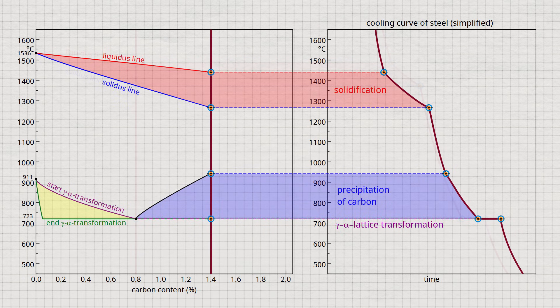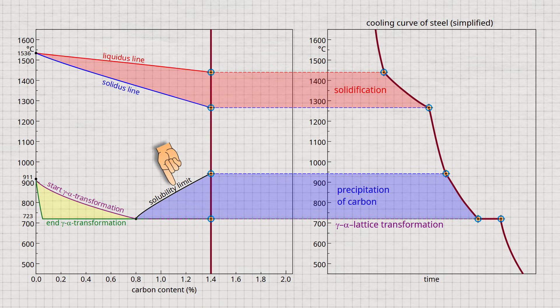At higher carbon concentrations, the cooling curve shows a region with a lower cooling rate. Additional microstructural changes occur in this region. This is due to the limited solubility of carbon in the face-centered cubic lattice, and when the maximum solubility is exceeded, the carbon precipitates from the gamma-iron lattice. This releases energy in the form of heat, which is the reason for the slower cooling rate shown in the cooling curve.